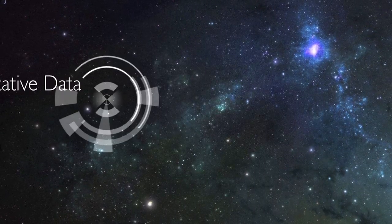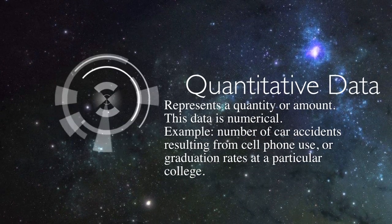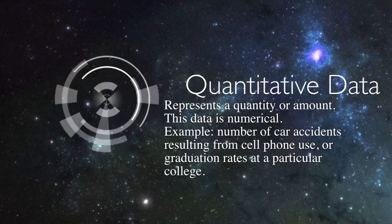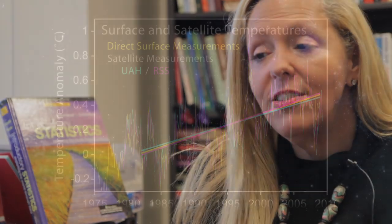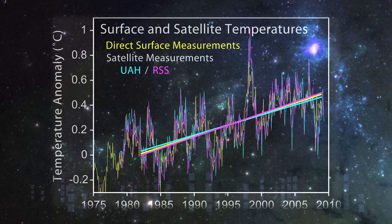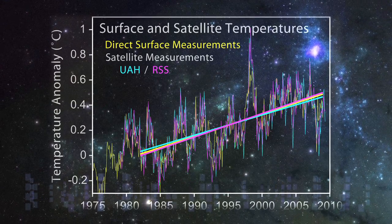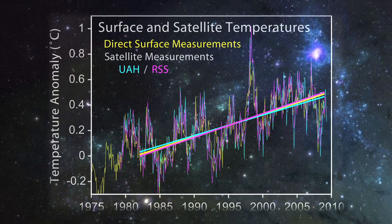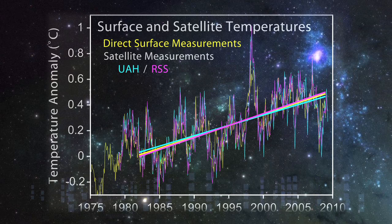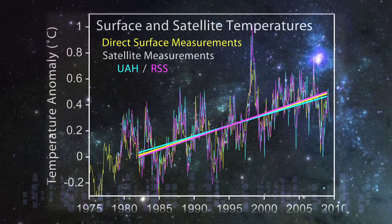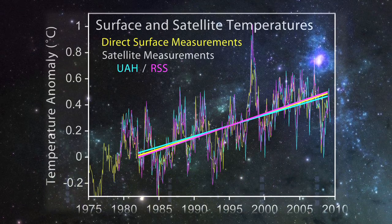Quantitative data represents a quantity or amount. This data is numerical — sometimes it's measured by things like air quality, number of car accidents resulting from cell phone use, or graduation rates at a particular college. Quantitative data that is measured but does not have a true zero, like temperature, is called interval data. The reason why temperature in Celsius or Fahrenheit does not have a true zero is because zero degrees does not mean there are no degrees.